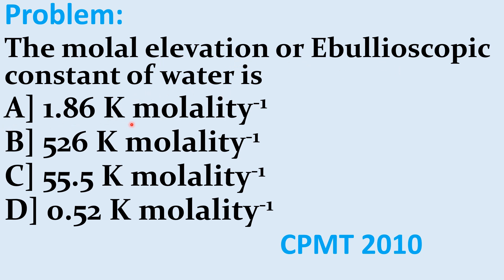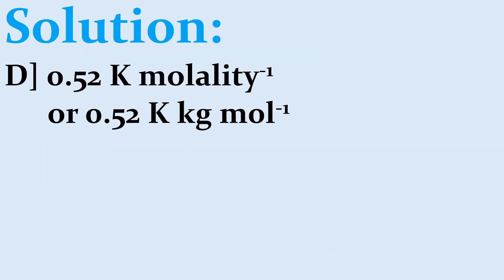The molar elevation (ebullioscopic) constant of water is: option A 1.86 K/molality, option B 5.26 K/molality, option C 55.5 K/molality, option D 0.52 K/molality. The answer is 0.52 Kelvin per molality — this value must be remembered. It can also be written as 0.52 Kelvin·kg per mole.